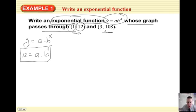Next, use the other coordinate. 3 comma 108, so 3 is X and 108 is Y. So 108 equals A times B to the power of X, which is 3. All right, now, there is equation number 2.